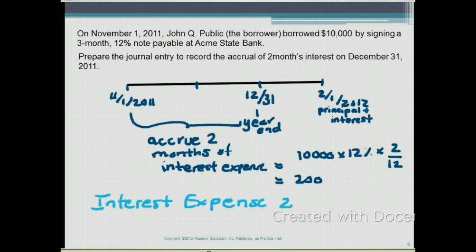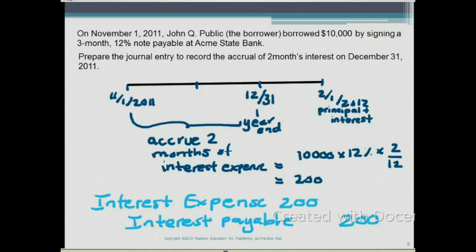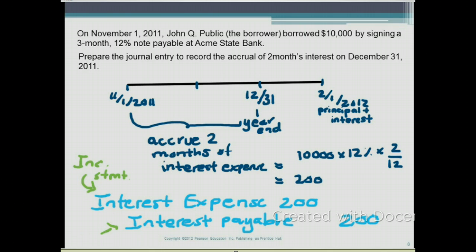Now that we have the $200 interest expense, we debit interest expense for $200 and credit interest payable for $200. That is the journal entry to record the accrual of two months' interest on December 31, 2011. The $200 interest expense appears on the income statement, and interest payable is a current liability on the balance sheet.